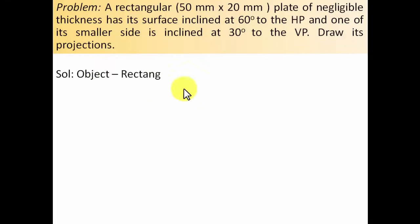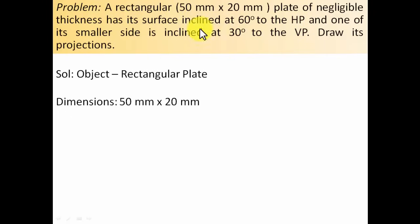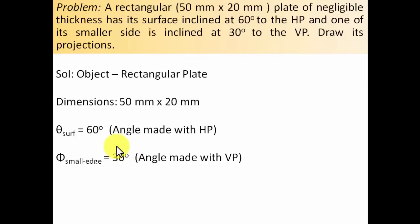A whole lot of data has been given to us. The object is a rectangular plate with dimensions 50 mm by 20 mm — larger side 50 mm, smaller side 20 mm. Two sets of angles: 60 degrees and 30 degrees. The surface inclination to the HP is denoted by theta, so theta equals 60 degrees. The smaller edge inclination to the vertical plane is denoted by phi, so phi equals 30 degrees.